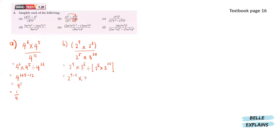That gives us 2 to the power of 4 and 3 to the power of negative 14. So since there is a multiply here, we have 2 to the power of 4 over 3 to the power of 14.